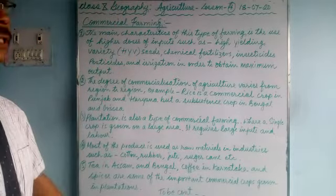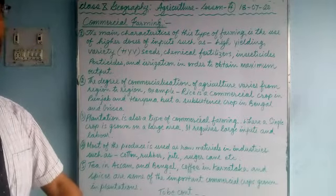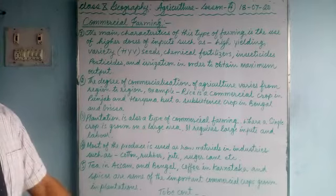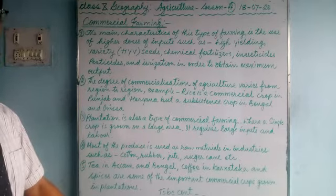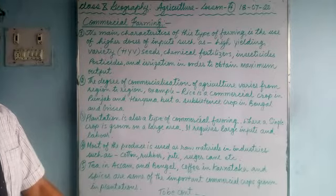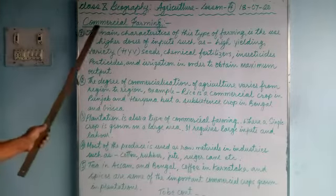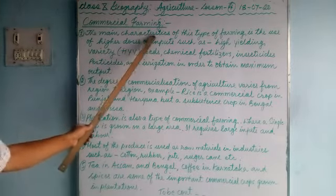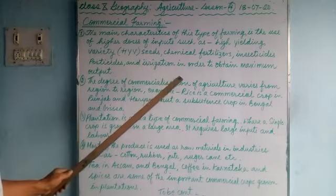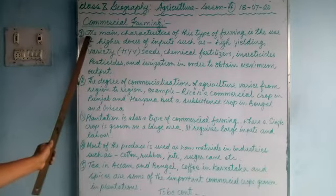Since India is an agricultural country, most of the people work in fields, in farms, and in rural areas, growing crops and keeping themselves busy throughout the year. Now, after intensive farming and shifting cultivation, we come to commercial farming.